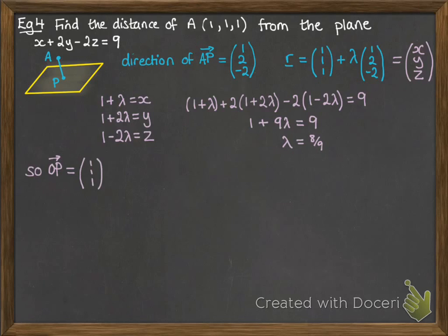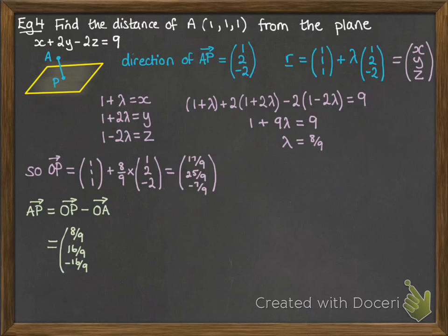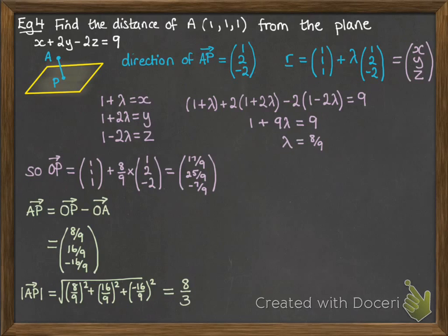Moving on from there, our position vector for P is found by substituting 8 ninths into our equation for the line. To find the distance, we subtract the two position vectors to get the vector AP, and then find the modulus of that vector. That gives us a final answer of 8 thirds.